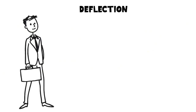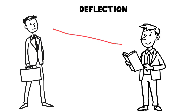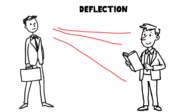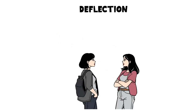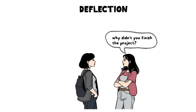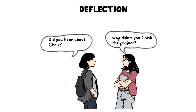Deflection. Deflection is shifting attention away from oneself onto another person or topic to avoid dealing with personal issues. A person might turn every conversation into a joke when feeling anxious.